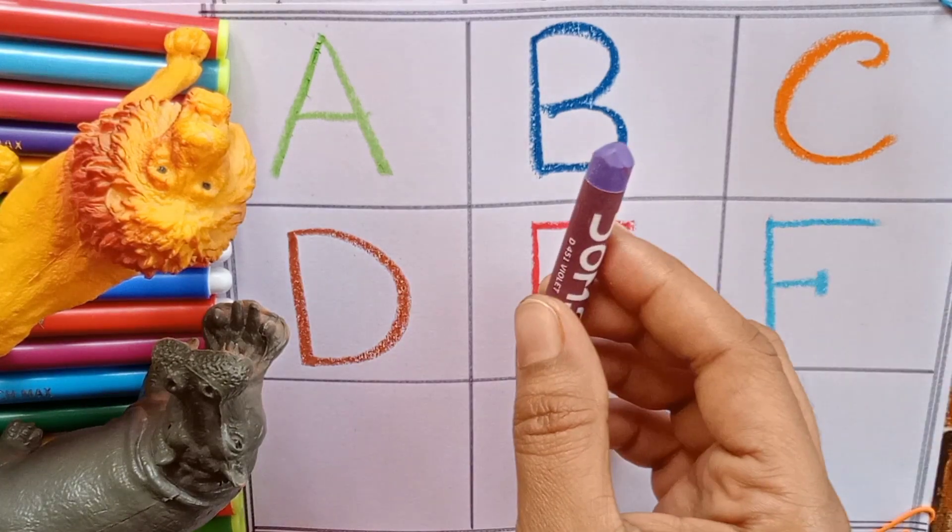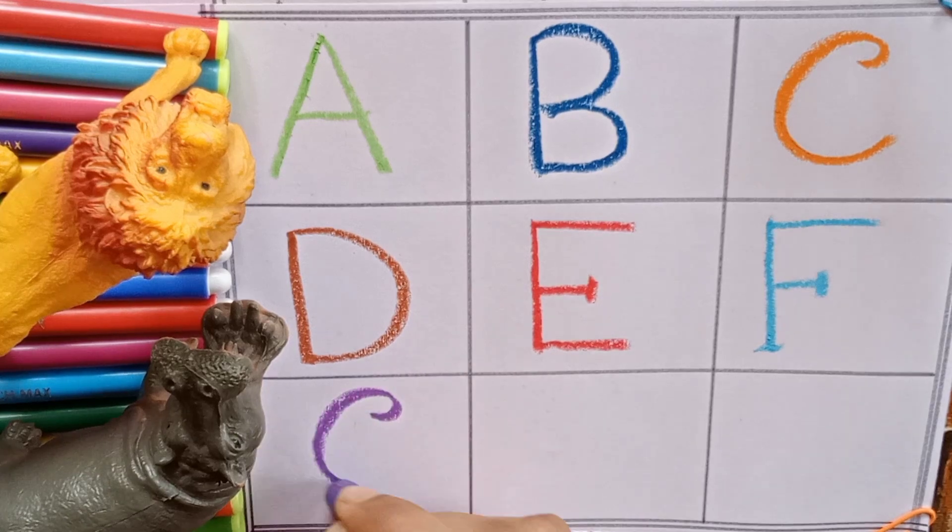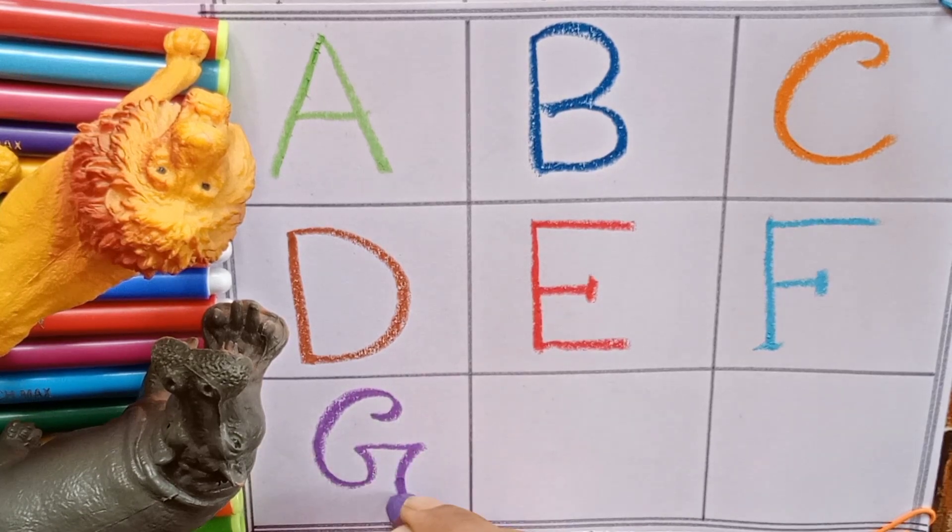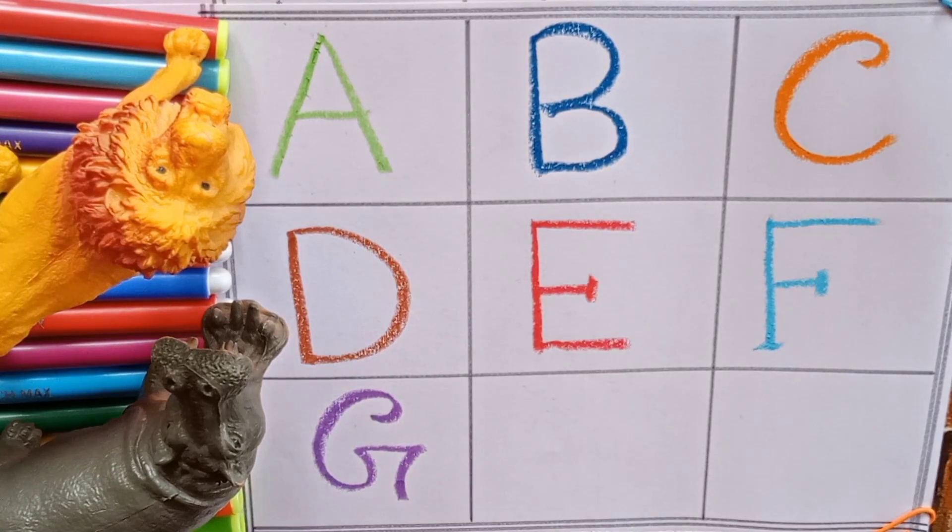Our seventh color is purple. G. G for guava. Guava is a fruit. G for also game.